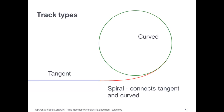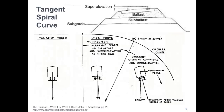Next we'll go over some track types. There are three track types: tangent or straight track; curved, which is any track that is not 100% straight or tangent; and spiral, which is a curve whose degree of curve varies. For each type of track, this drawing shows the train's center of gravity. The spiral is the transition from straight to curve with superelevation. Could you define superelevation for everyone?